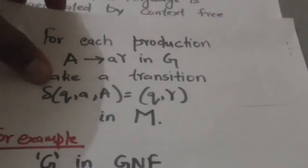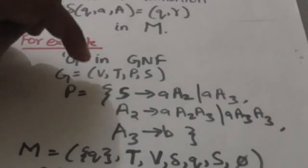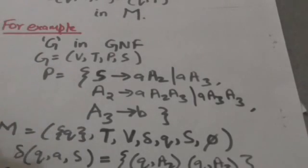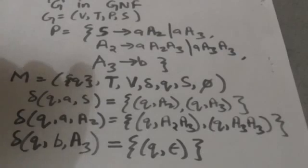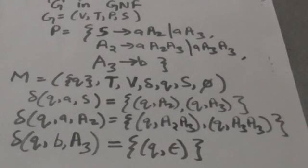It would be more clear after this example. Suppose there is a context-free grammar G in GNF, described by the quadruple V, T, P, S. P is the set of these productions. S is the start symbol of grammar G. We have to construct a pushdown automata M which will accept the language generated by this grammar G by empty stack. Pushdown automata M will have only one state Q, and the start symbol S of grammar G will be the stack start symbol in pushdown automata M.